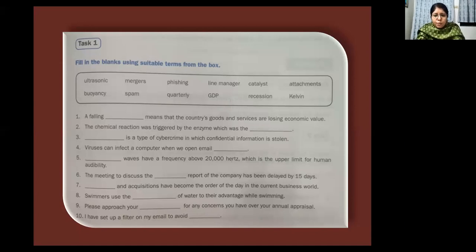So the first one here is a falling dash means that the country's goods and services are losing economic value. So a falling GDP. A falling GDP means that the country's goods and services are losing economic value.